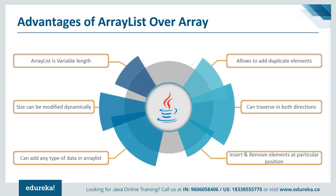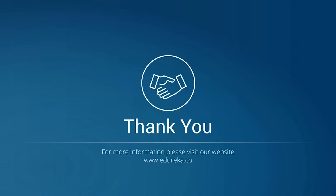Now let's jump into the last topic: advantages of ArrayList over arrays. First, ArrayList is variable length — arrays are fixed length and cannot change size once created, but ArrayList can grow and shrink dynamically. The size can be modified dynamically as elements are added or removed. You can add any type of data and it also allows duplicate elements. You can traverse an ArrayList in both directions — forward and backward — using a ListIterator, and it also allows you to insert and remove elements at a particular position. I hope you understood the concept of ArrayList and the difference between arrays and ArrayList. That's all for the session. Thank you and have a nice day.